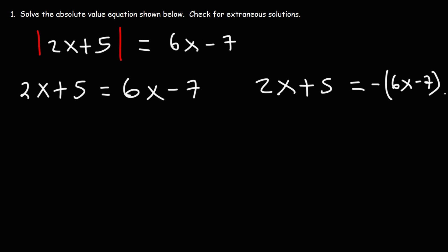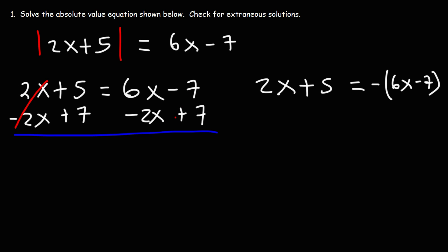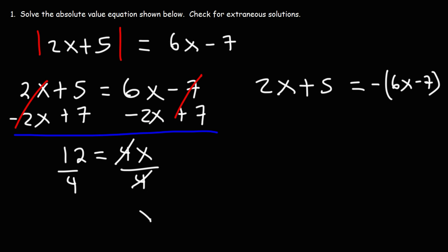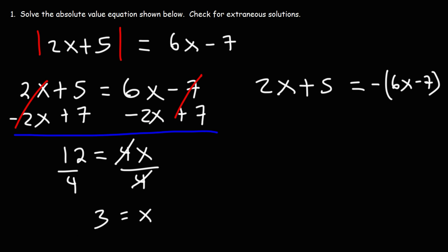Starting with the equation on the left: subtract 2x from both sides and add 7 to both sides to isolate x. The 2x terms cancel and the 7 terms cancel, giving us 5 plus 7 equals 12, and 6x minus 2x equals 4x. Dividing both sides by 4 gives x equals 3, our first potential solution.